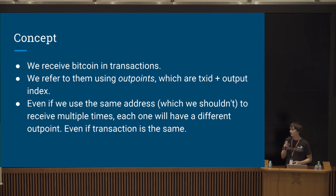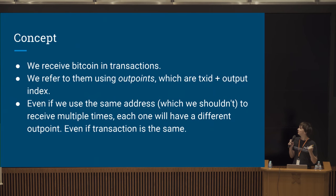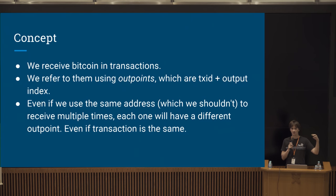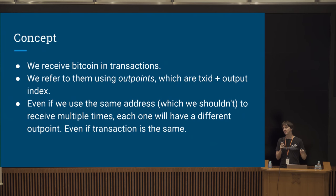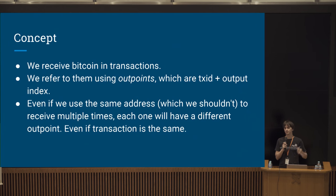The concept behind coin selection: we receive Bitcoin in transactions, and the bitcoins we hold are referred to using outpoints. An outpoint is the ID of a transaction plus an index inside that transaction — the index of the output which refers to the outpoint we own. So basically, if you have a transaction with two outputs and the first one is yours, you have an outpoint with the transaction ID and index zero.